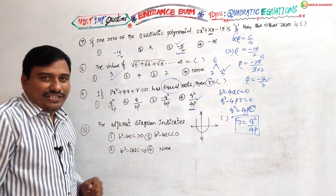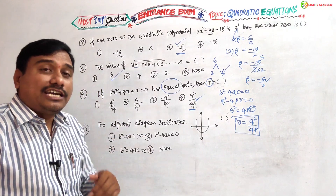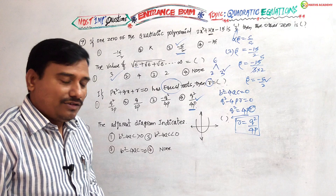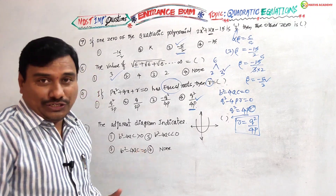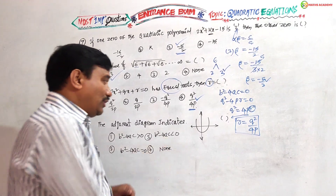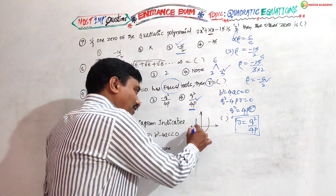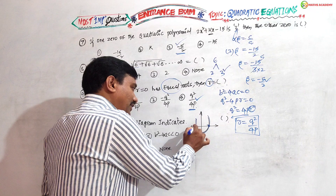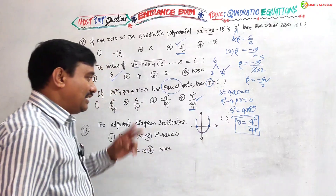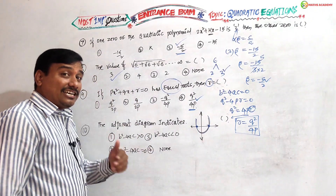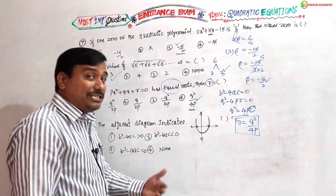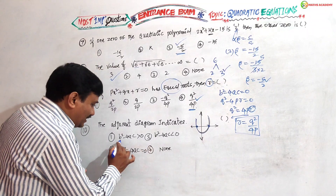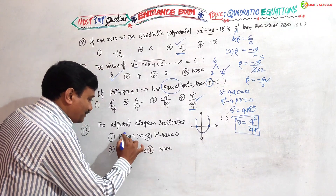Tenth question: the adjacent figure shows a parabola intersecting the x-axis at two different places. This means delta is greater than zero — discriminant is greater than zero, i.e., b squared minus 4ac is greater than zero.